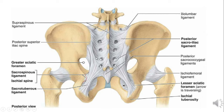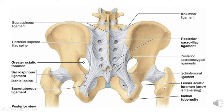The most important ligaments of the hip region are the sacrotuberous ligament — the larger one arising from the posterior aspect of the sacrum and attached to the ischial tuberosity — and deep to it, the sacrospinous ligament, arising from the lateral aspect of the lower part of the sacrum and attached to the ischial spine. These two ligaments convert the greater sciatic notch and lesser sciatic notch into foramina. The greater sciatic foramen connects the pelvis to the gluteal region, while the lesser sciatic foramen connects the perineum to the gluteal region.